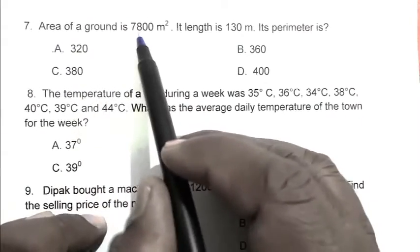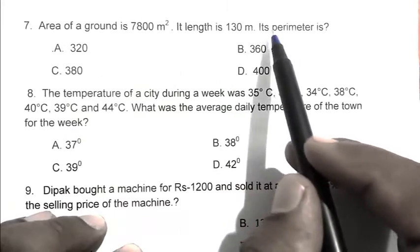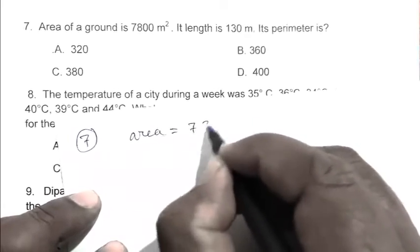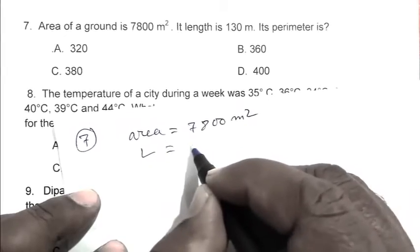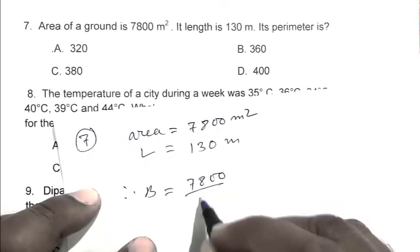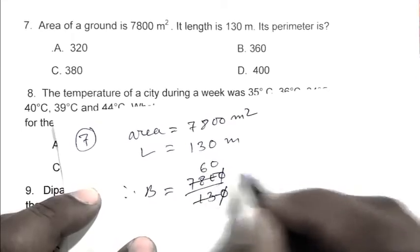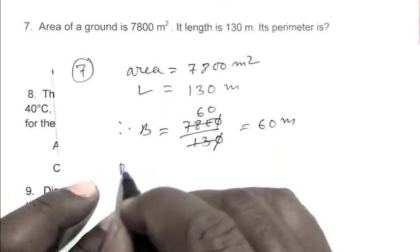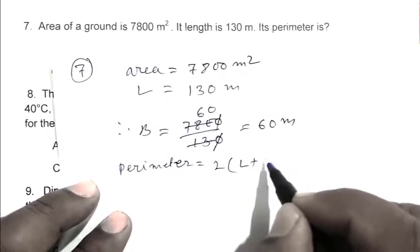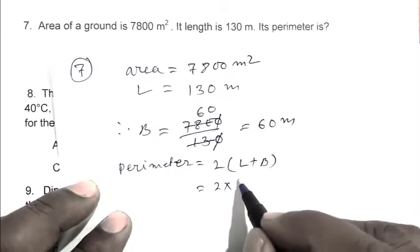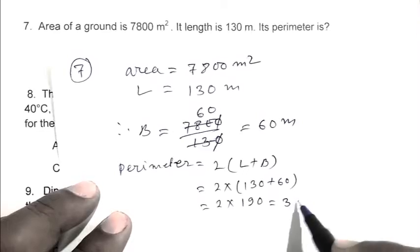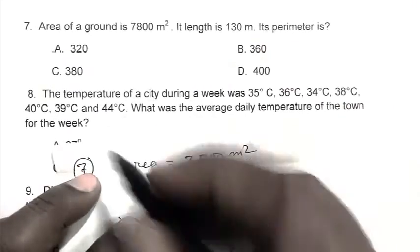Question number 7: Area of a ground is 7800 square meters. Its length is 130 meters. Its perimeter is what? Breadth equals 7800 / 130 equals 60. Perimeter equals 2 × (length + breadth), which is 2 × (130 + 60), equals 2 × 190, which is 380 meters. So C is the right answer.